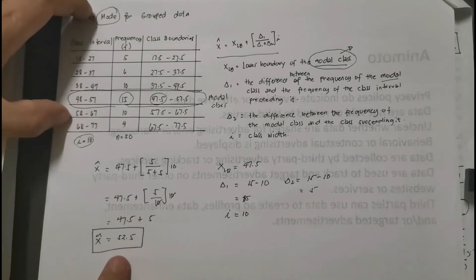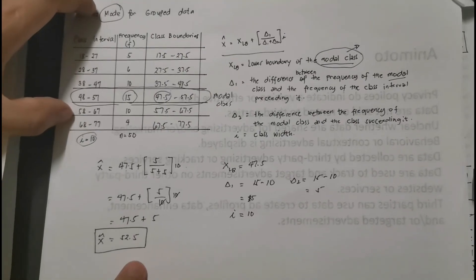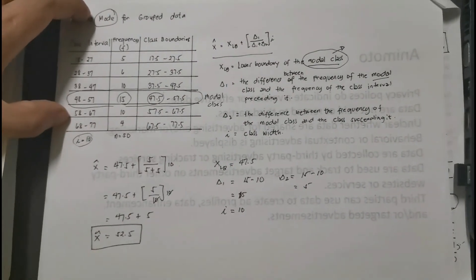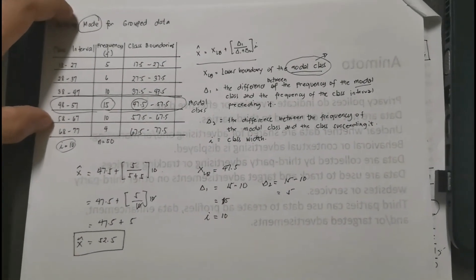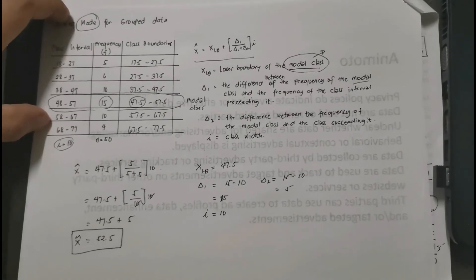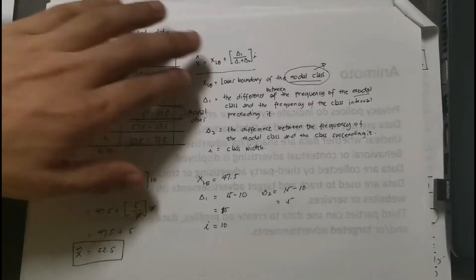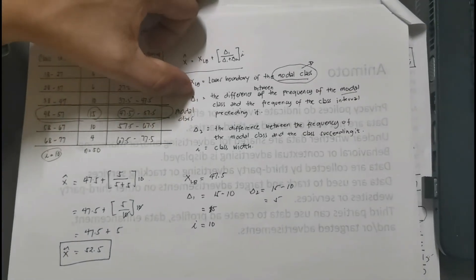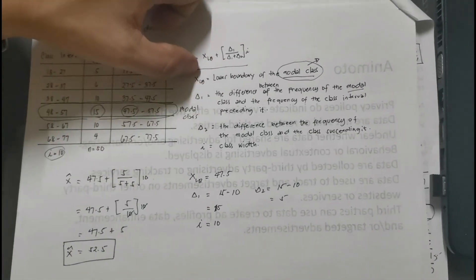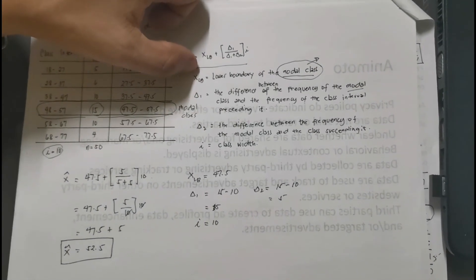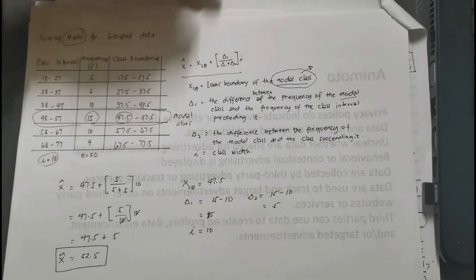Okay, that is the whole process of finding or solving for the mode of grouped data. So that's how easy it is, so long as you know how to identify delta 1, delta 2, as well as the lower boundary of the modal class. Then I think nothing to worry about how to solve for the mode.